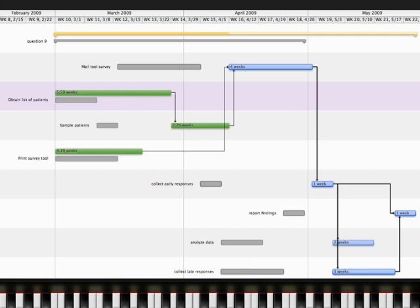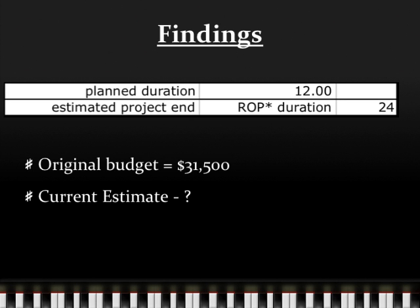To calculate the adjusted planned duration, we must consider the project's initial planned duration. As with the previous problem, we are only concerned with the critical path. The planned duration was 12 weeks. The rate of performance is 200%. Therefore, the project can be estimated to take twice as long to finish, or 24 weeks. The original budget is based on each task's planned estimate. The current estimate cannot be calculated, however, because of insufficient data.